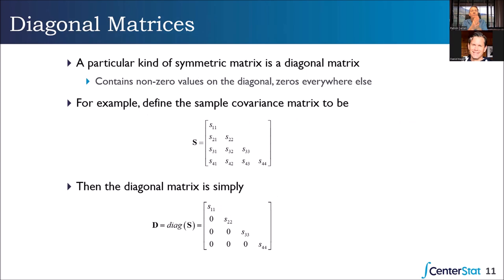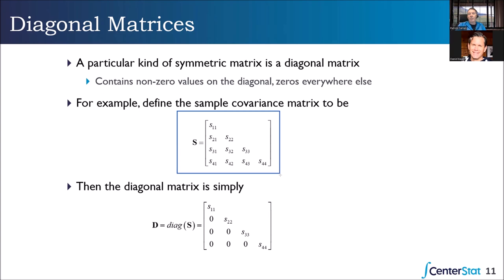Now we're cooking with gas. We've got rectangular matrices, square matrices, transposes, and symmetric matrices. Let's think about a couple of special kinds. Imagine we have a covariance matrix with four measures — the variances on the diagonal and covariances off the diagonal. Bold capital S, four by four, square and symmetric. There are reasons why we might want a matrix that only has the variances — that's the diagonal matrix.